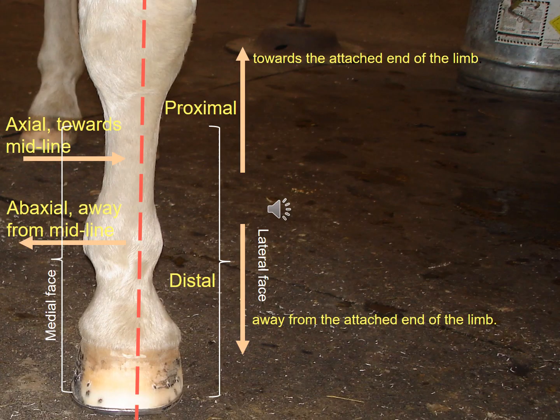These are terms that we use every day in the shop with the students to get them practiced at using them. Closer to the attached end of the limb, we always describe as proximal, and the opposite of that would be distal, closer to the ground. The proximal border of the hoof wall will be up in the coronary band region, and the distal border would be on the ground surface.